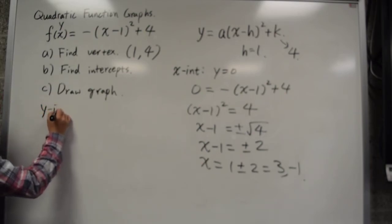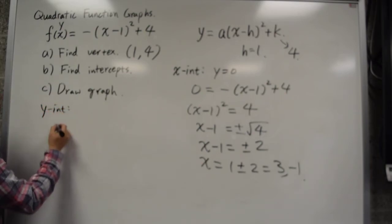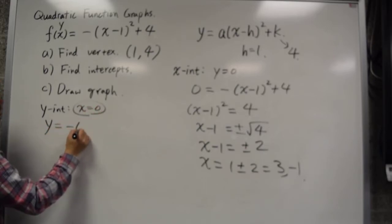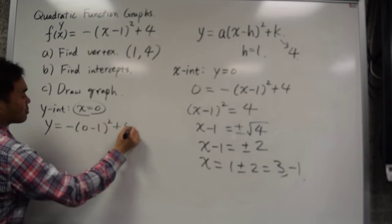What about the y-intercept? The y-intercept is easy. You just plug in x equal to 0. And so y is equal to negative 0 minus 1 squared plus 4.